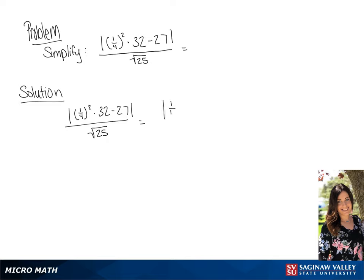So in our absolute value brackets, we have 1 over 16 times 32 minus 27 all over 5. We're going to now simplify everything in the absolute value brackets, so we get the absolute value of 2 minus 27 all over 5.